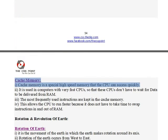Cache Memory: 1. Cache memory is a special high-speed memory that the CPU can access quickly.